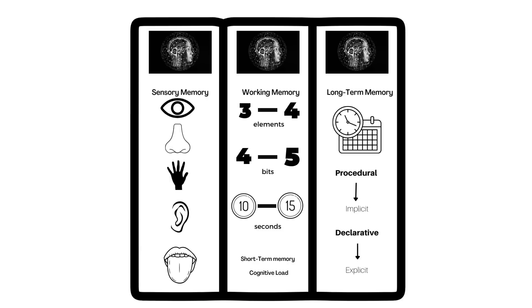Last but not least, let's move on over to the final column and get into long-term memory. Long-term memory is a permanent, large capacity repository of information, including organized knowledge structures and schemas. In layman's terms, long-term memory is unlimited in its capacity, and it involves your brain taking information from that short-term memory store — that working memory — and creating memories that last for an indefinite period of time. These memories can be from an hour ago to decades ago.